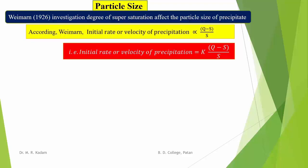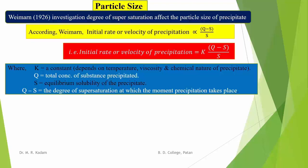Here K is a proportionality constant which depends upon the temperature, viscosity, and chemical nature of the precipitate. Q is the total concentration of the substance precipitated, that is the concentration of the supersaturated solution, and S is the equilibrium solubility of the precipitate, which is the concentration of the saturated solution. Q minus S is the degree of supersaturation at which the moment precipitation takes place.